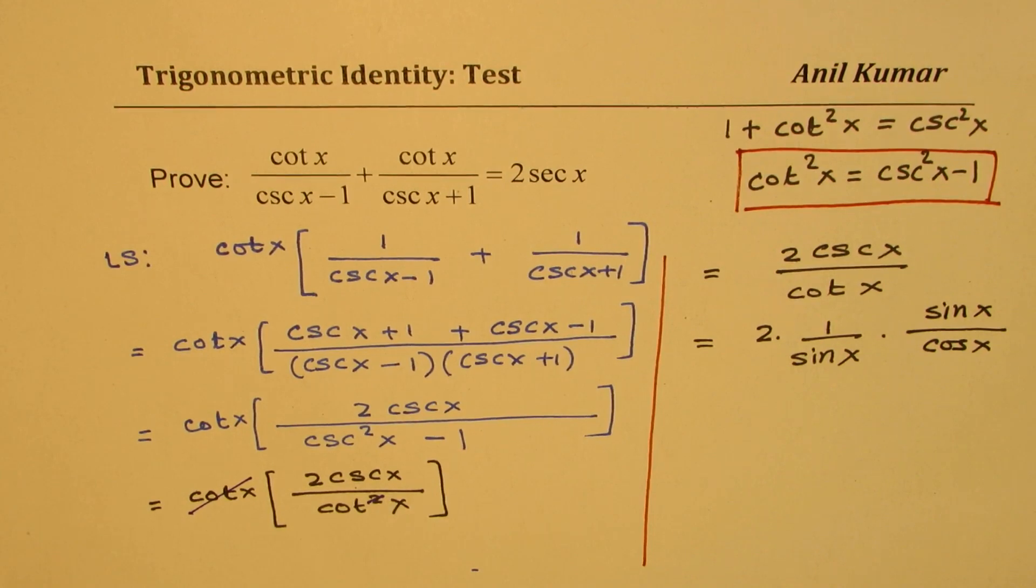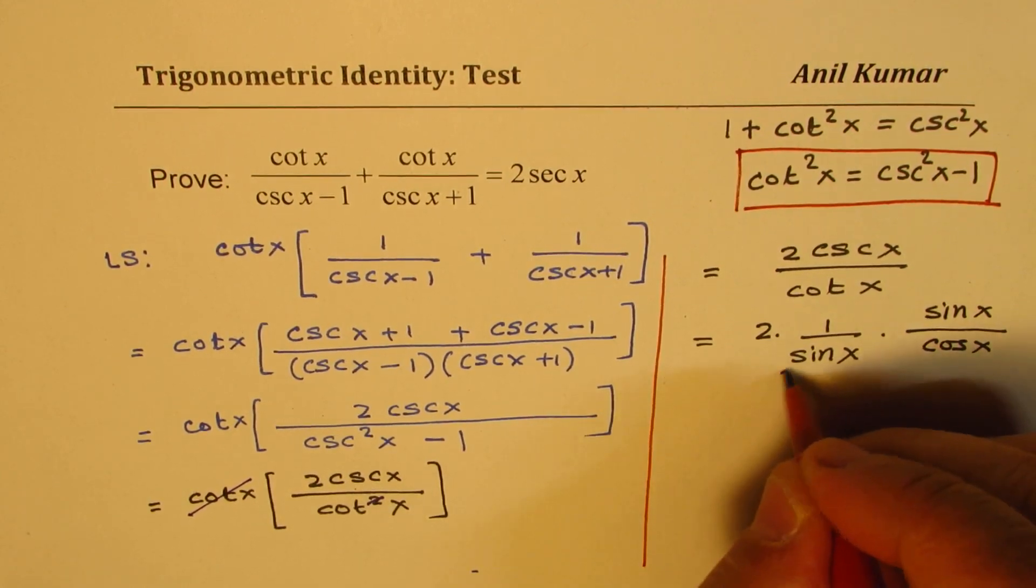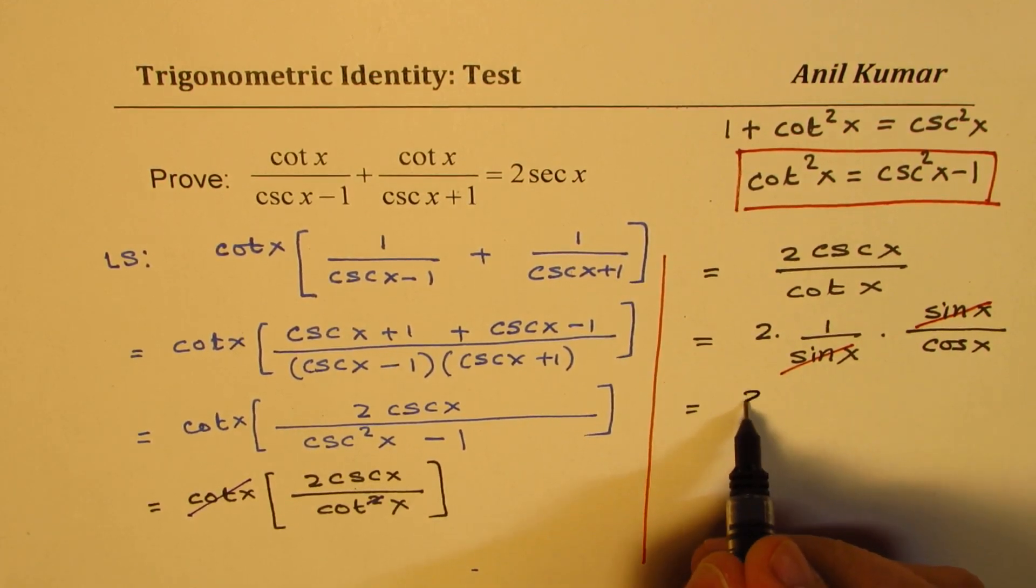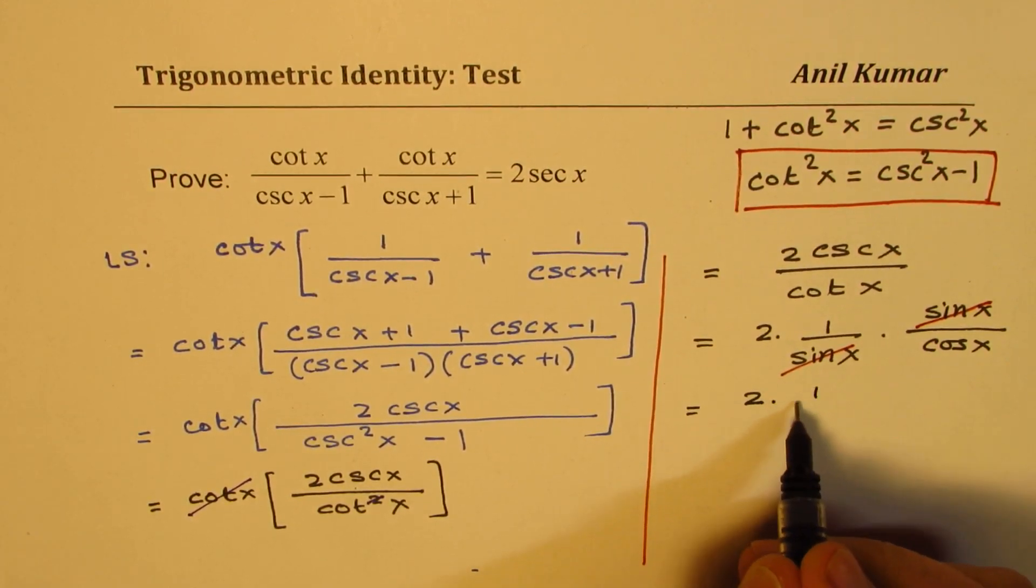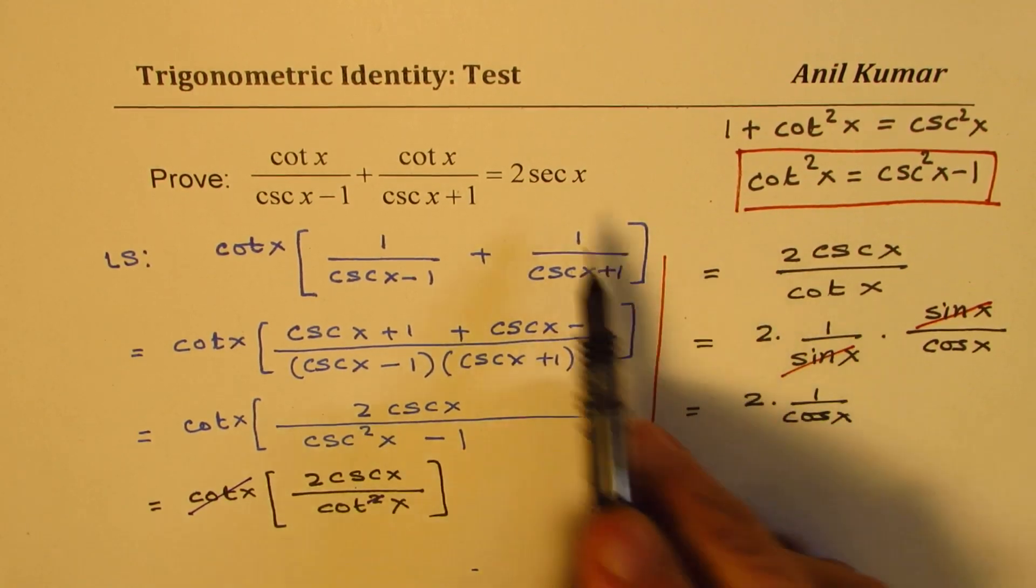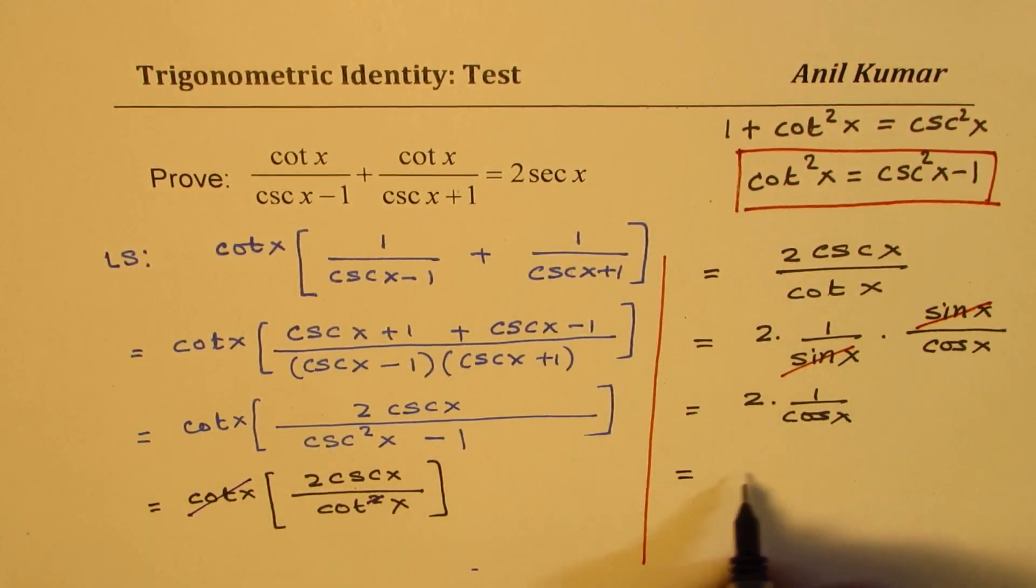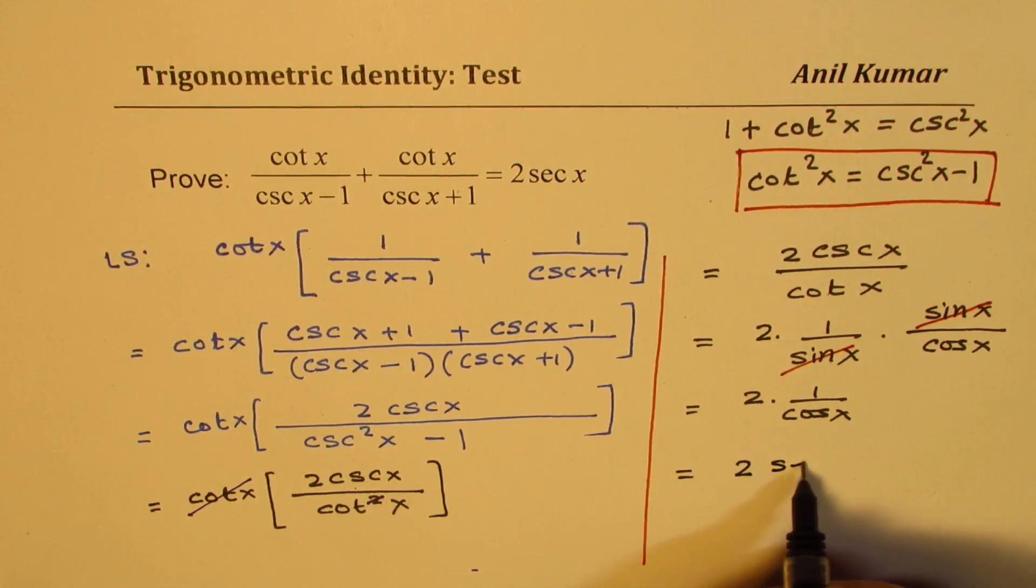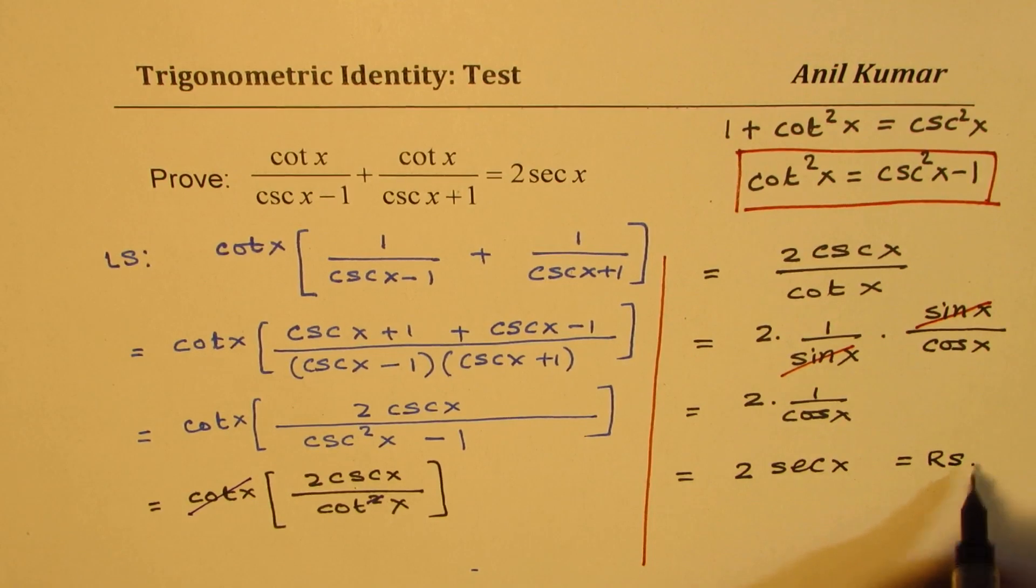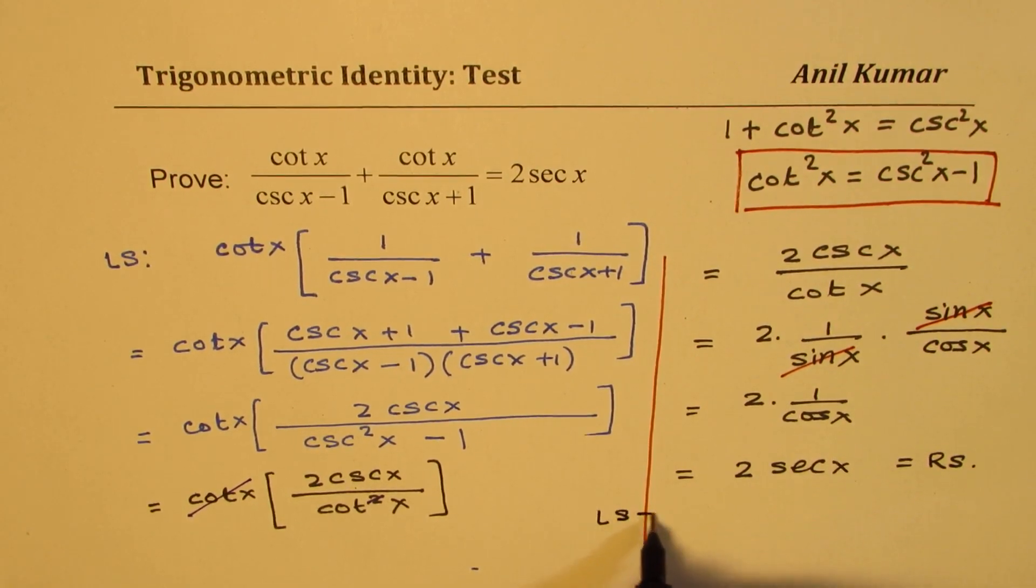Perfect. Now you can cancel sine and what you get here is 2 over cos x or 2 times 1 over cos x. 1 over cos x is secant x and that is what you need. So we get 2 secant x which is equal to right side. So we have shown how left side is equal to right side.